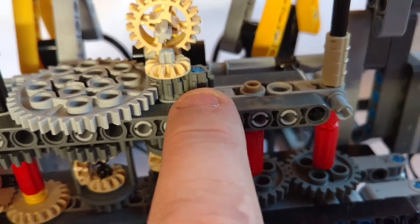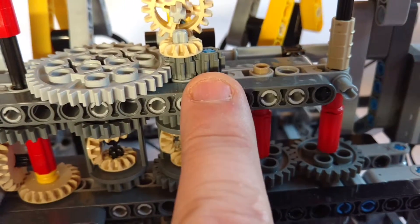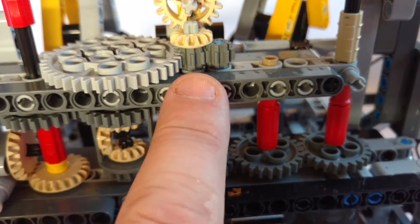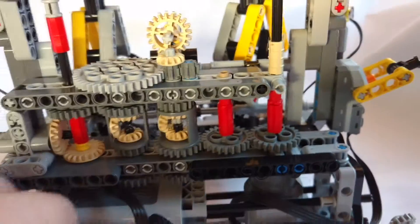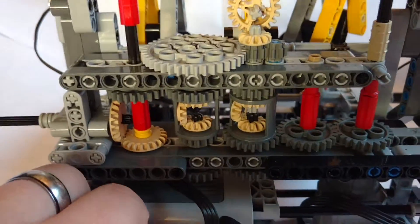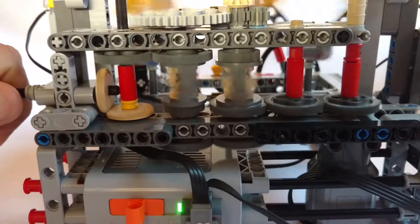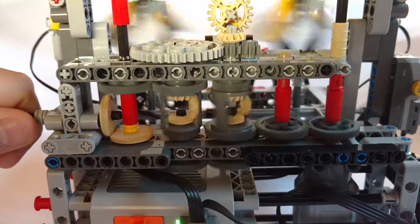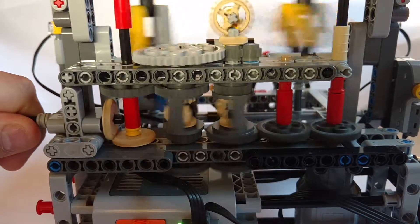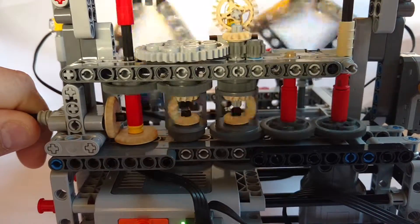There's a friction pin here that connects to another 8 tooth that prevents this, the 8 and 40 tooth from turning, until torque is applied to it, or resistance. So, you can watch and see.